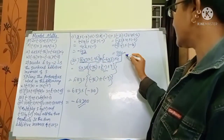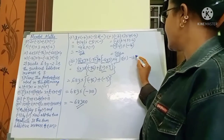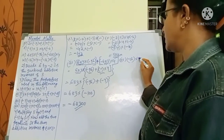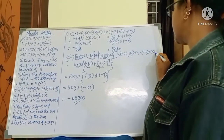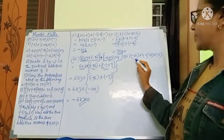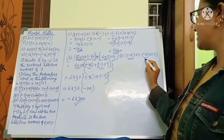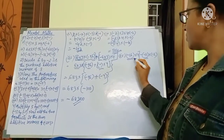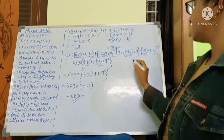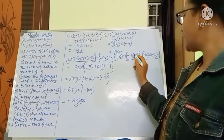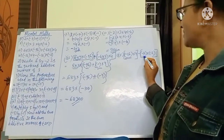Now the fourth problem. The question is: minus 16 into 4, minus minus 16 into minus 2. You can clearly see that minus 16 is common in both parts — in the first part minus 16 is there, and in the second part minus 16. So minus 16 is the common factor.